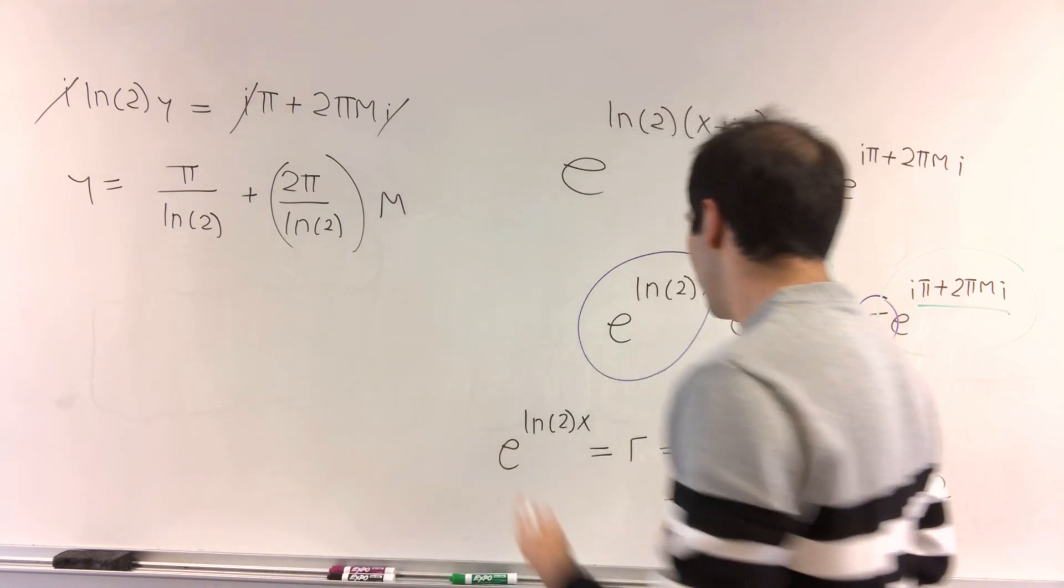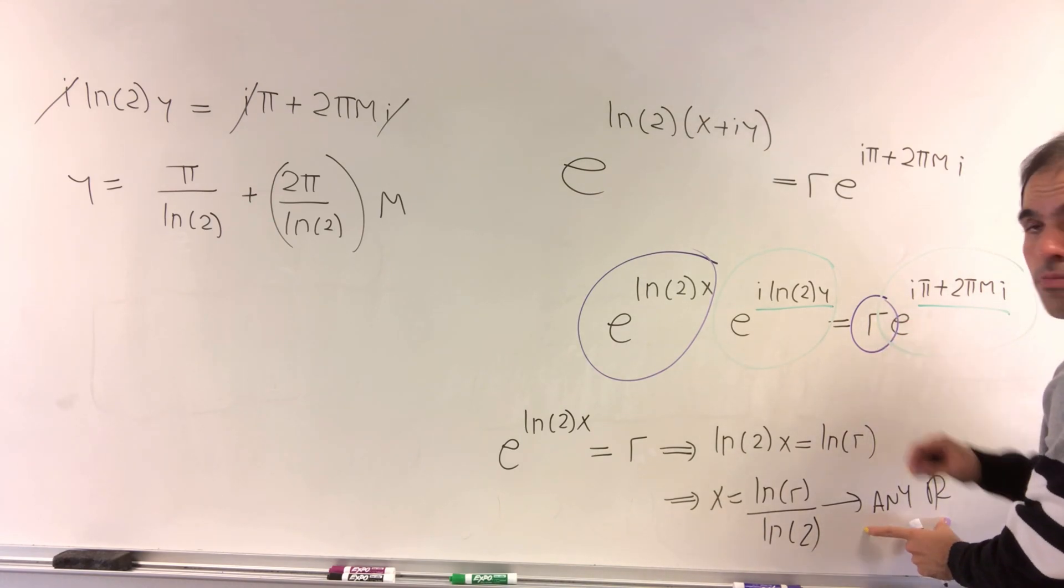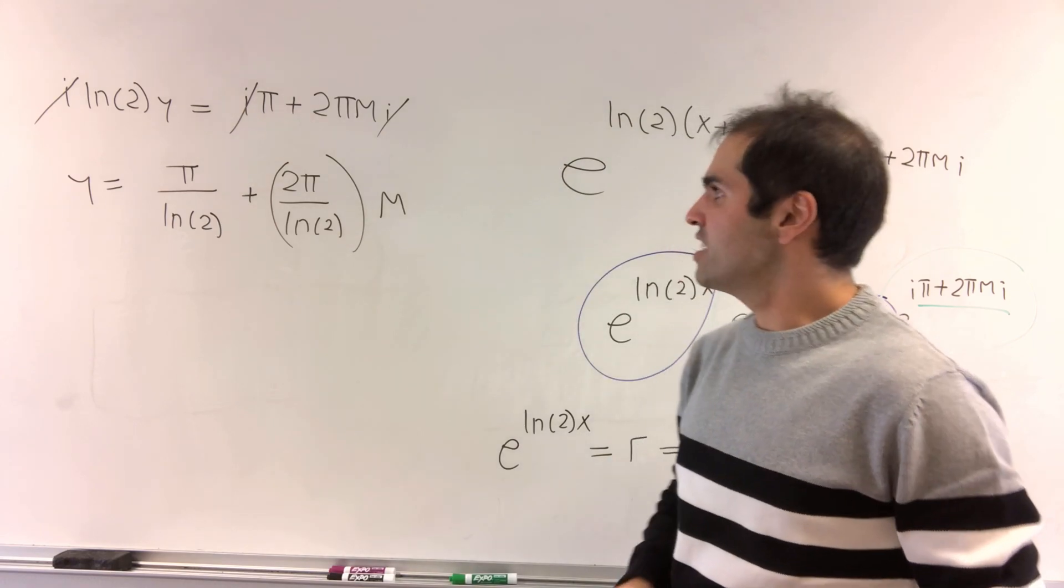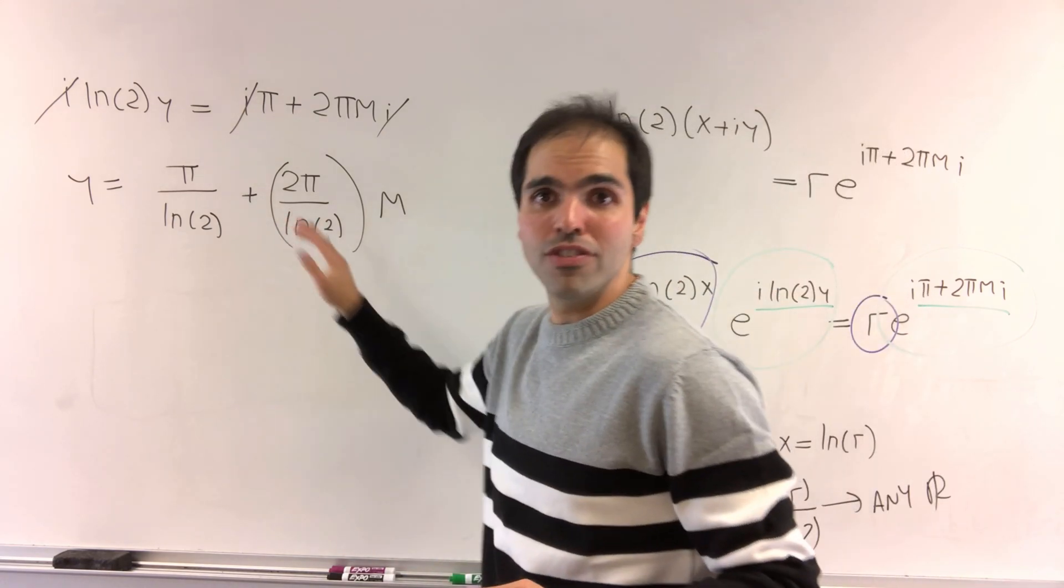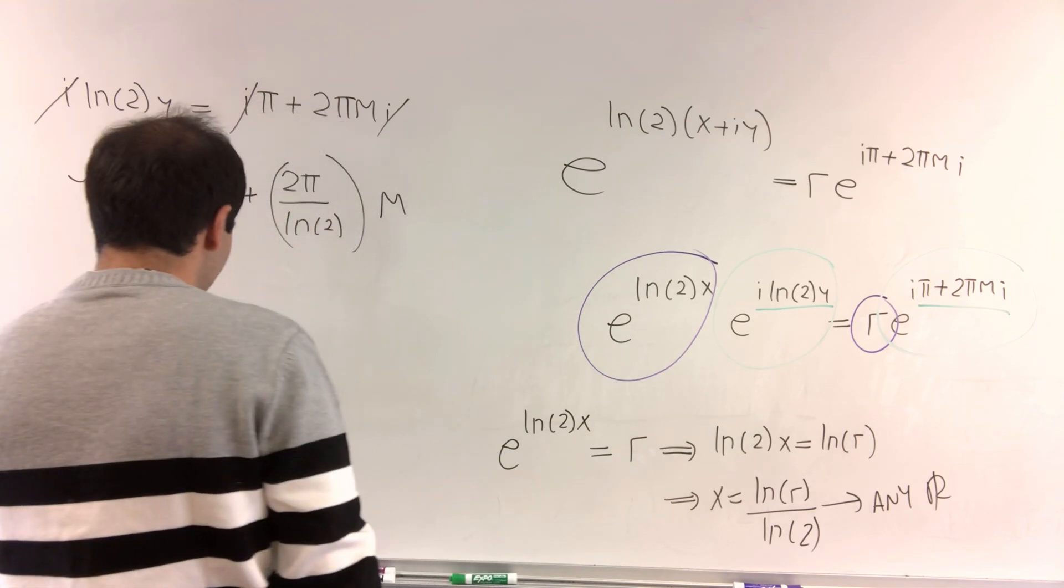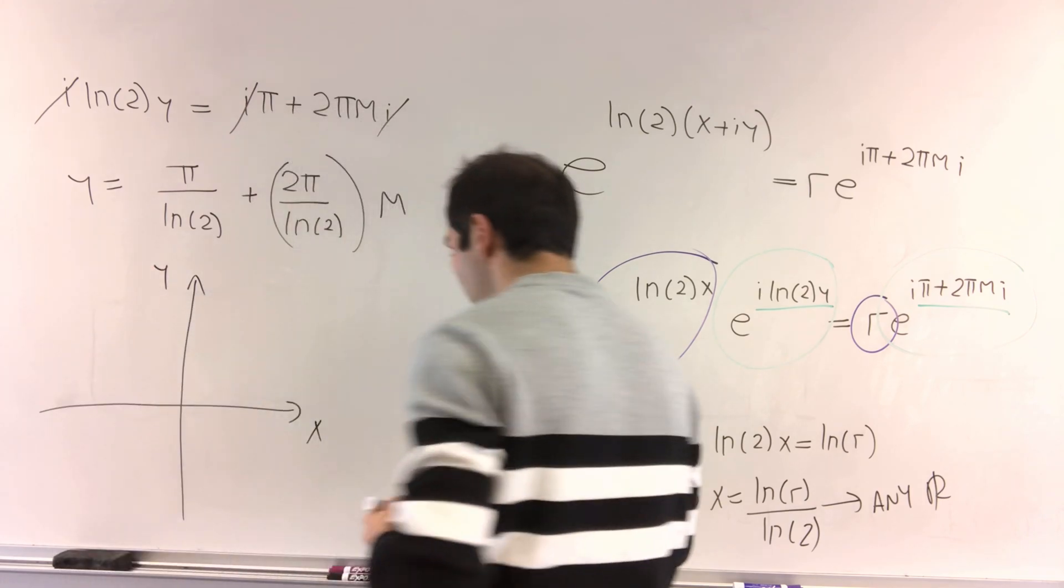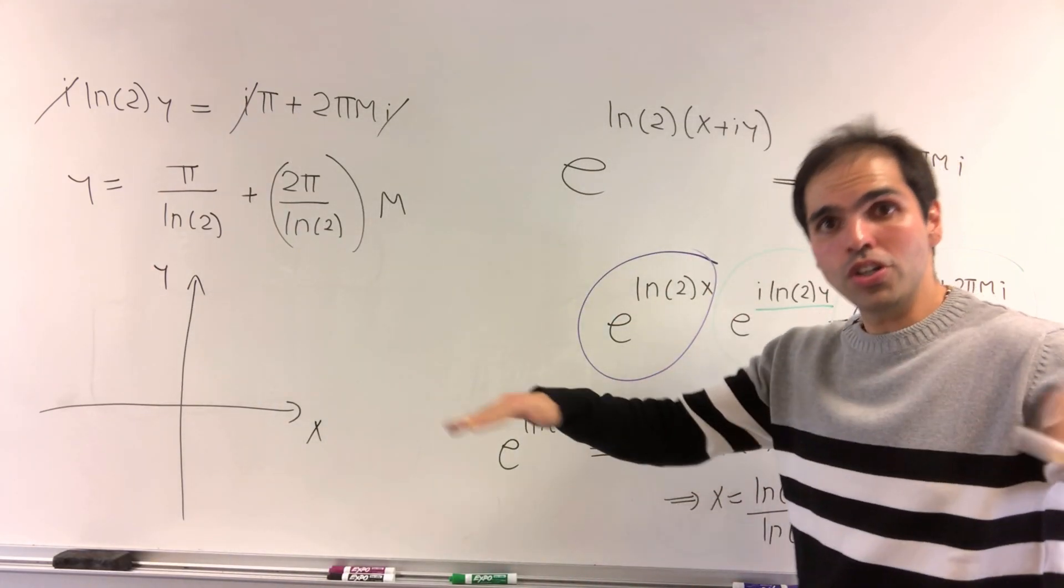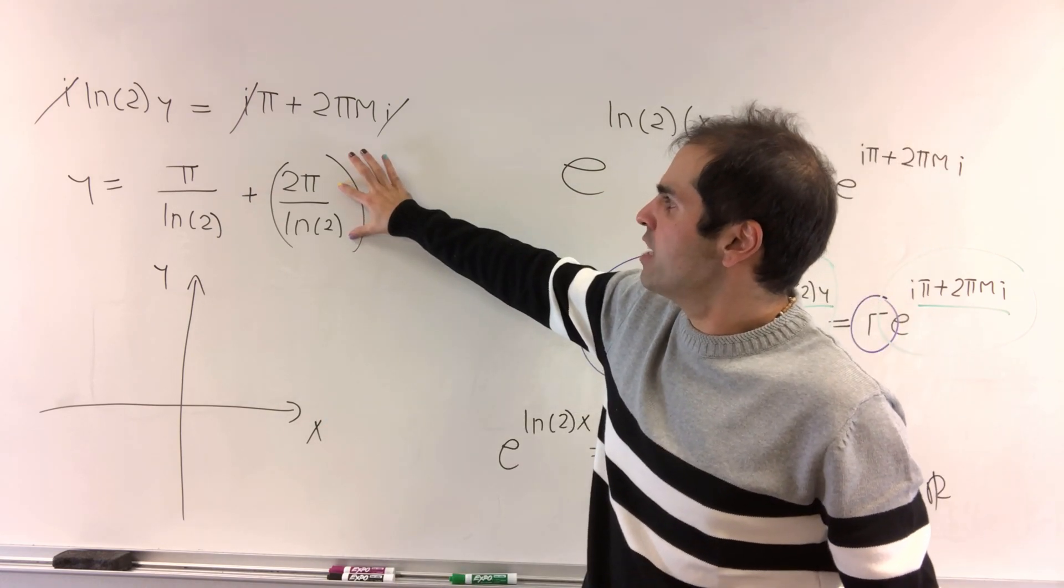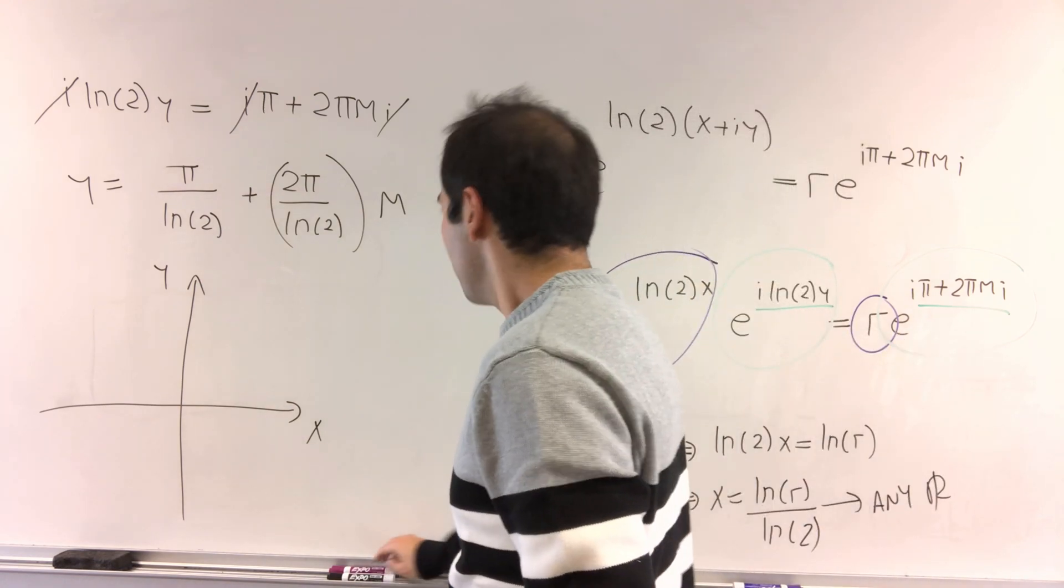So, by the way, so what is our solution? It's x is any real number, and y are those specific imaginary numbers, or specific real numbers. And really what this looks like on the complex plane, it's quite interesting. It tells you that the solutions are just vertical lines separated by 2 pi over ln of 2.